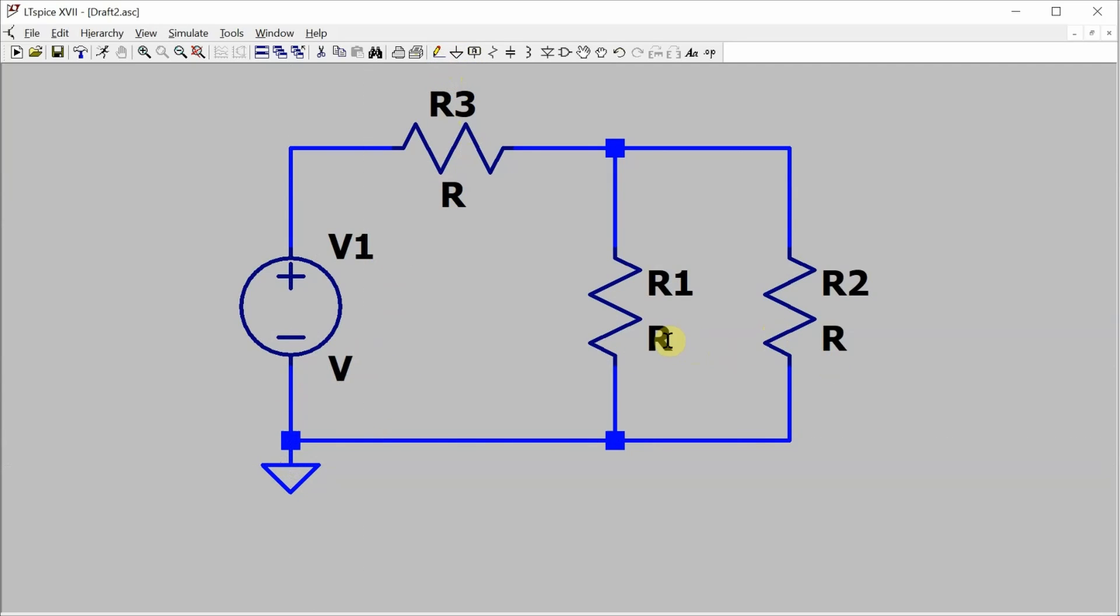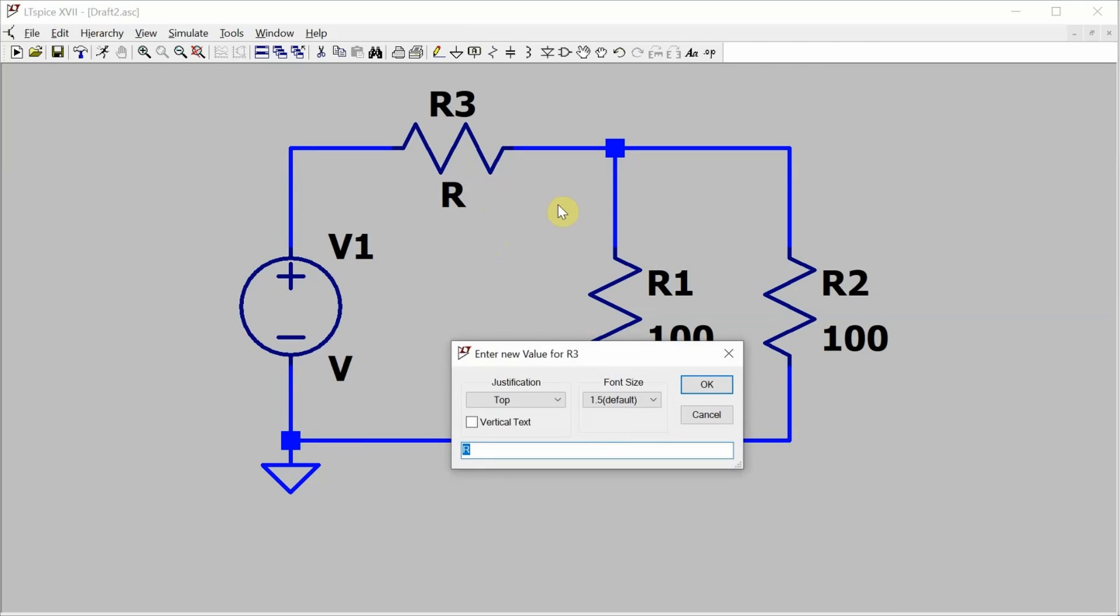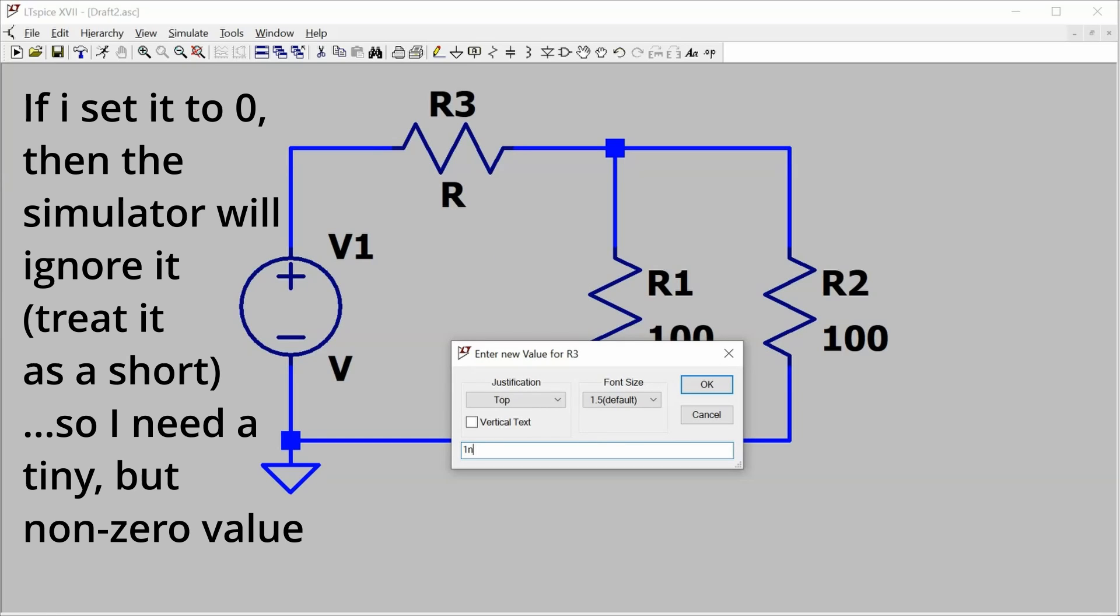Now let's put the values in for these resistors. Now this resistor here, I'm going to make a very small resistor, and I need it for measurement purposes. So I don't want it to affect the circuit. I'm going to make it one nanoohm, but I do need it to make some measurements.